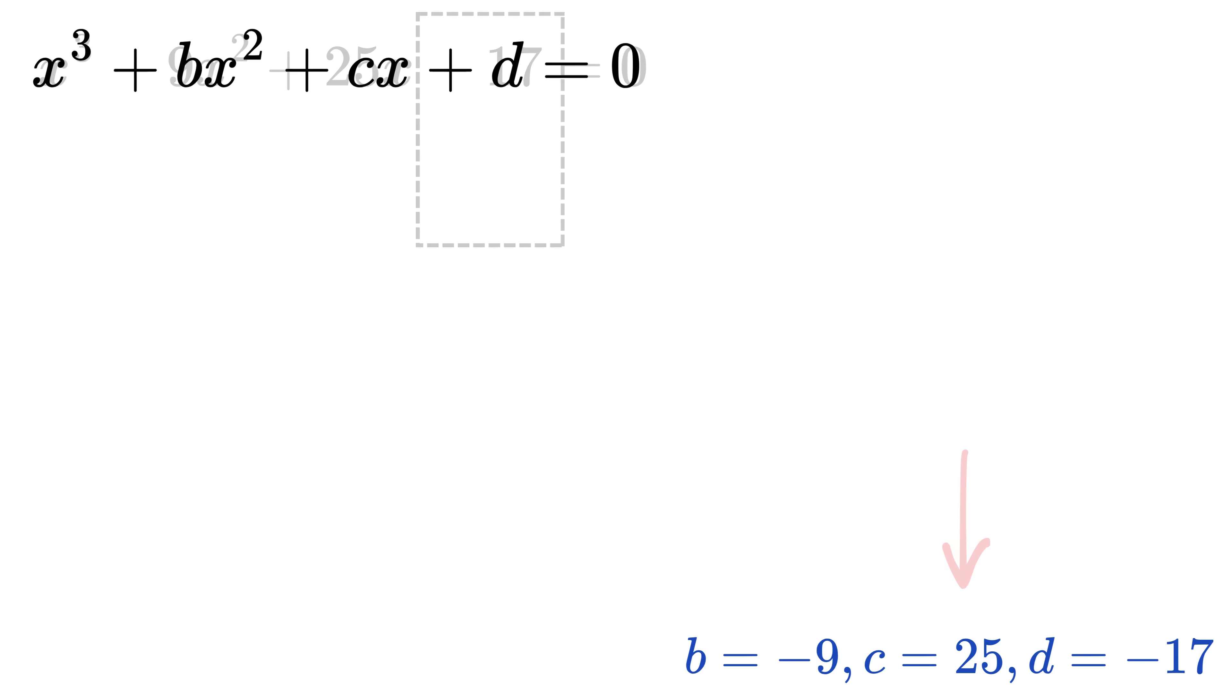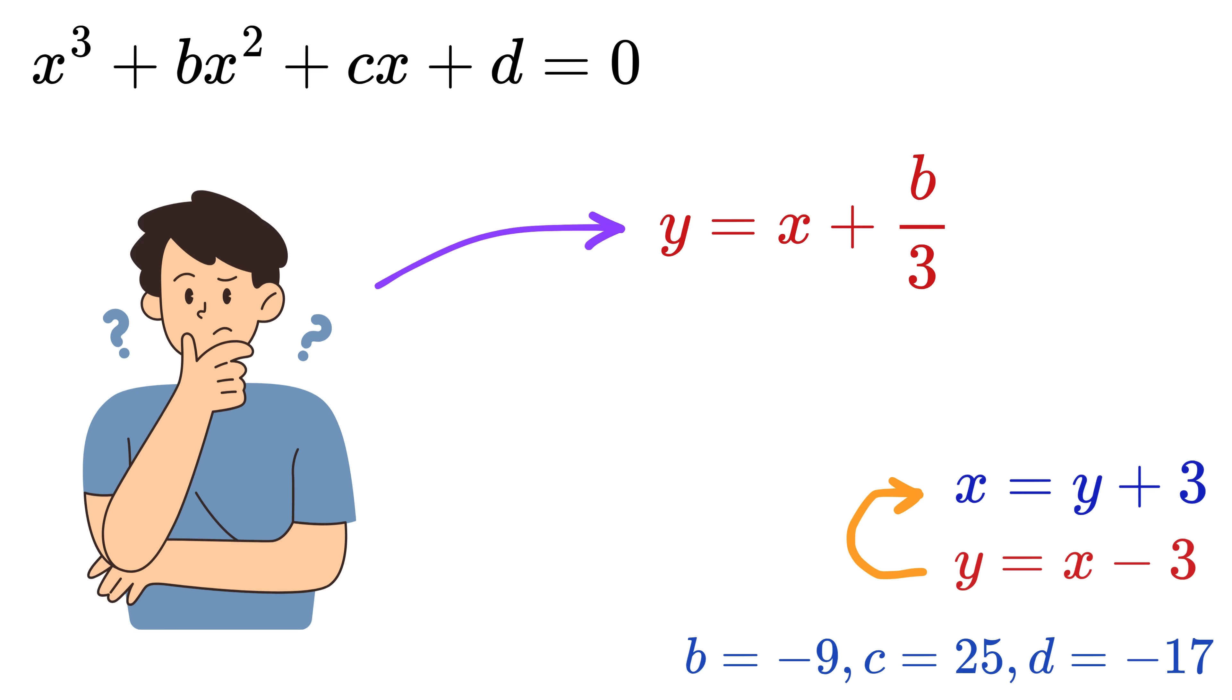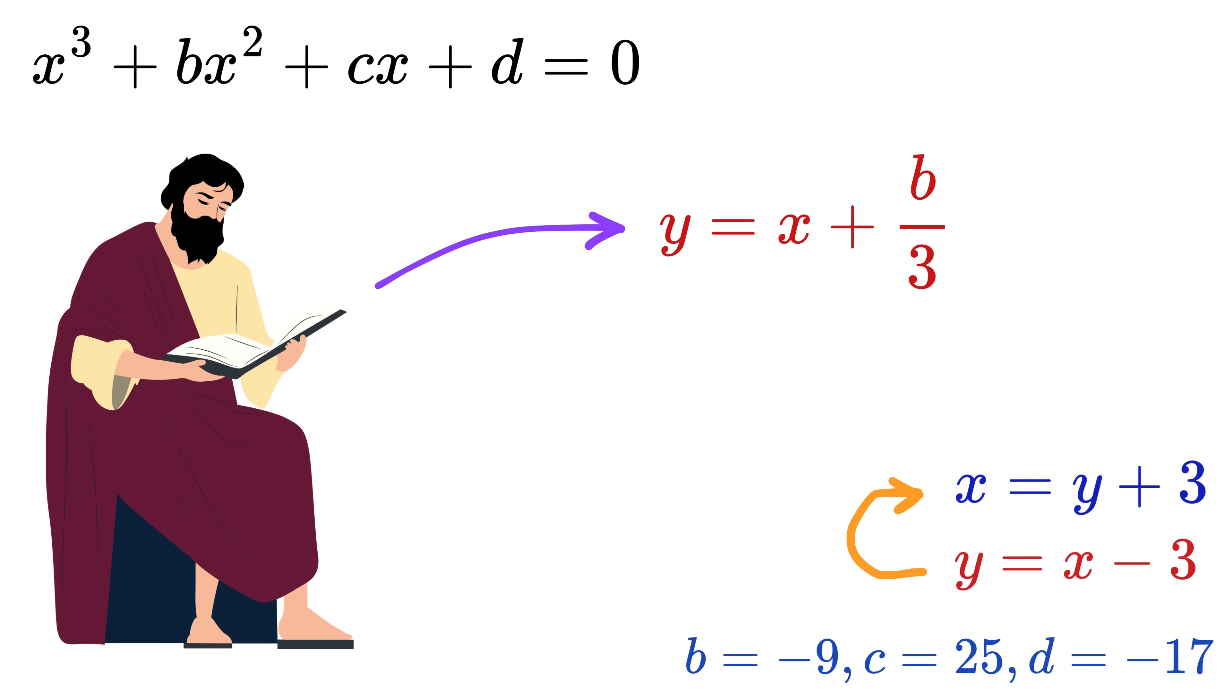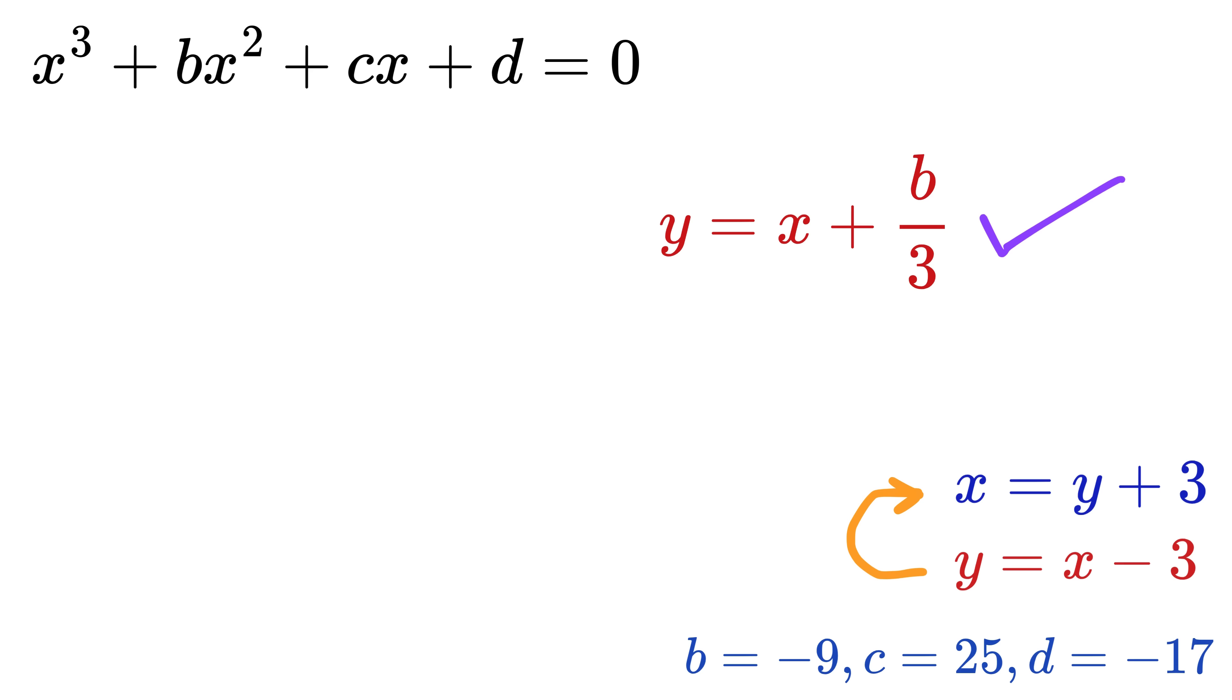So as a first step, we assume a variable y as x + b/3, or x + (-9)/3, or x - 3. So x = y + 3. Now don't ask why we are doing b/3 only, because that takes us into advanced stuff involving symmetry and the depressed cubic form. Just know that this step helps remove the x² term and gives us a simpler equation to work with.